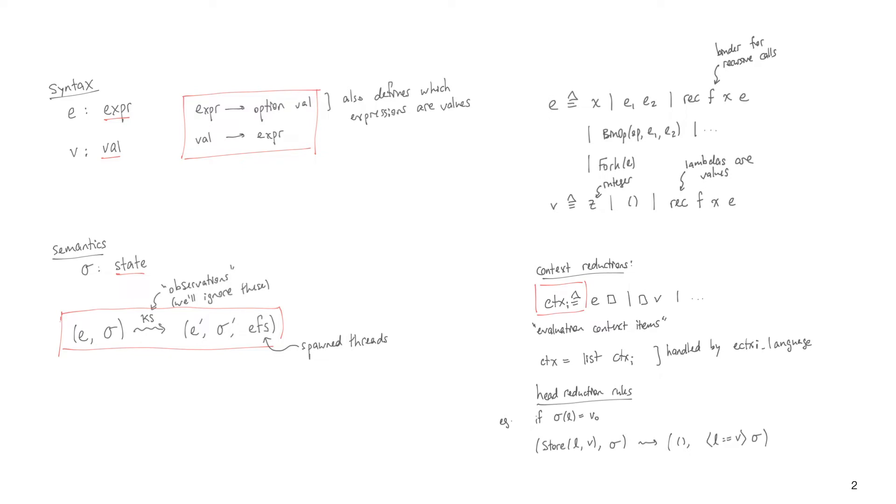Next we need to actually define this transition semantics. The way we do that matches the way we do it on a blackboard, namely by giving some evaluation contexts and then some rules for each specific construct in the language.